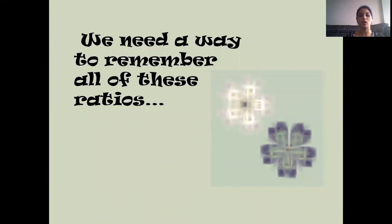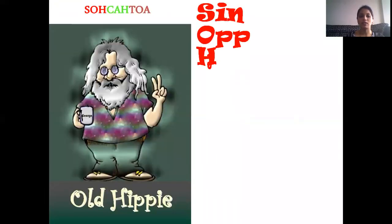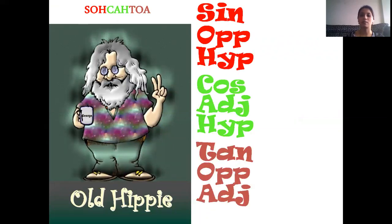Now, how to remember all these ratios? Look at the figure. Sine theta equals opposite over hypotenuse, cos theta equals adjacent over hypotenuse, tan theta equals opposite over adjacent. We have to remember one word only — that is SOCATO.